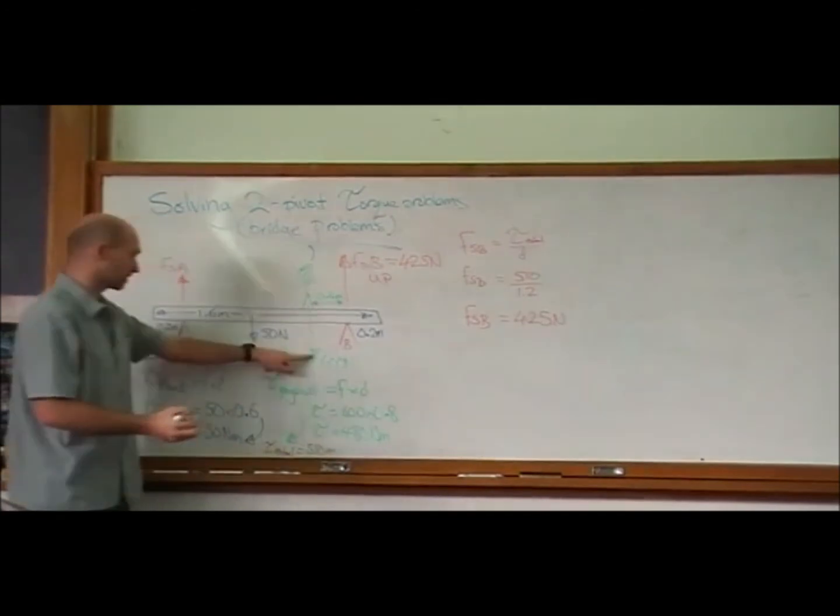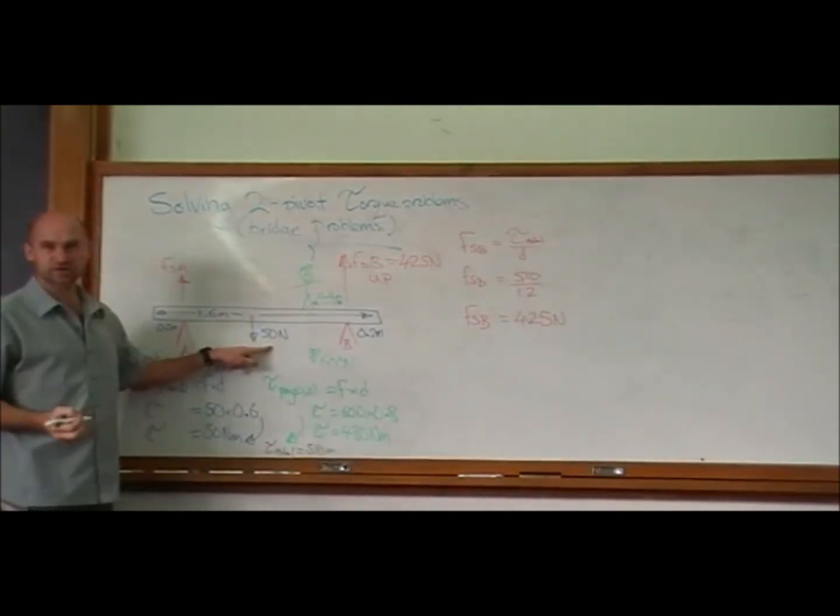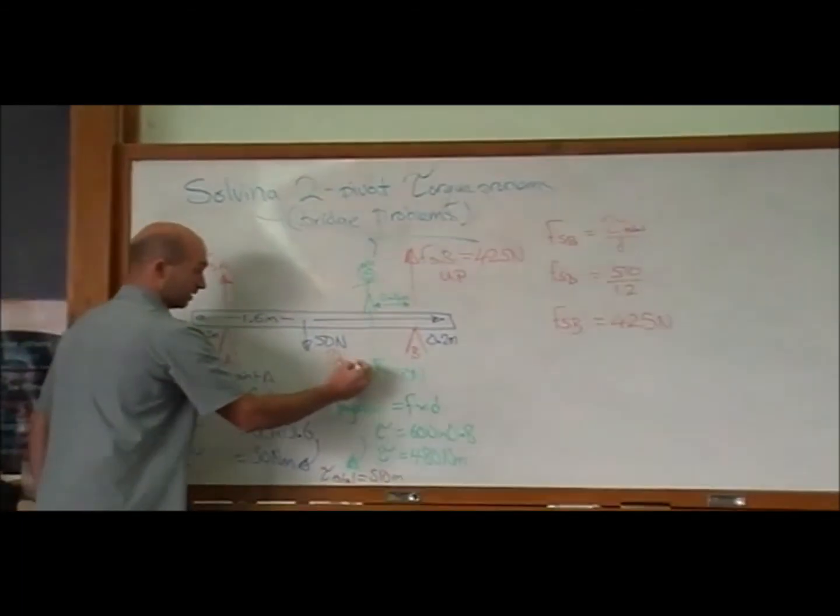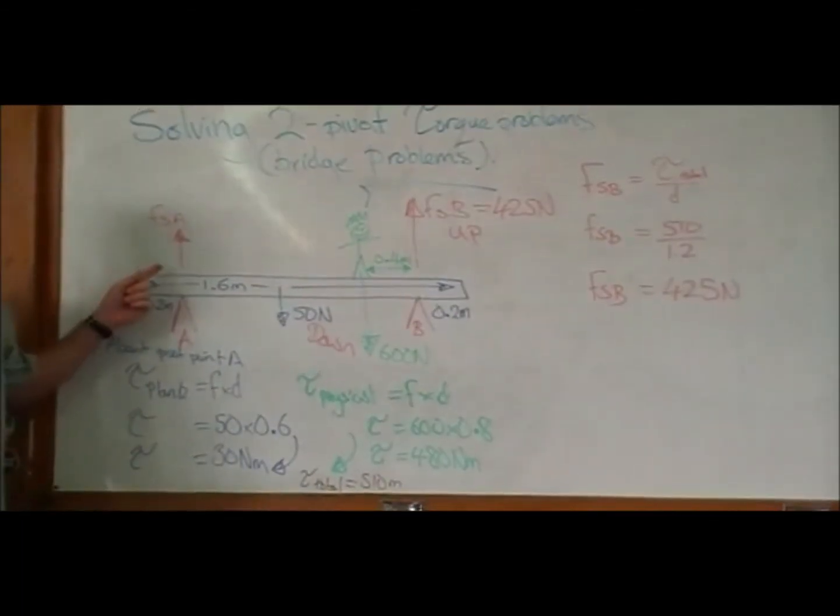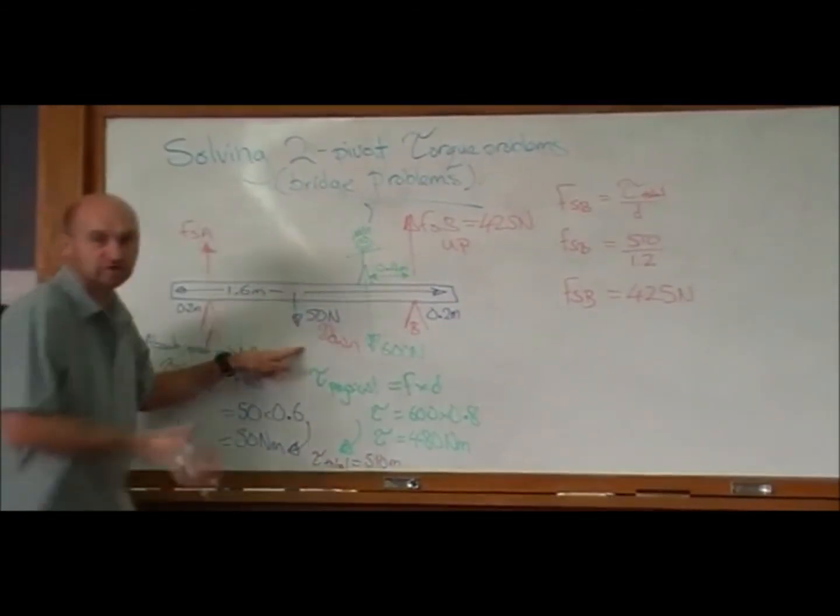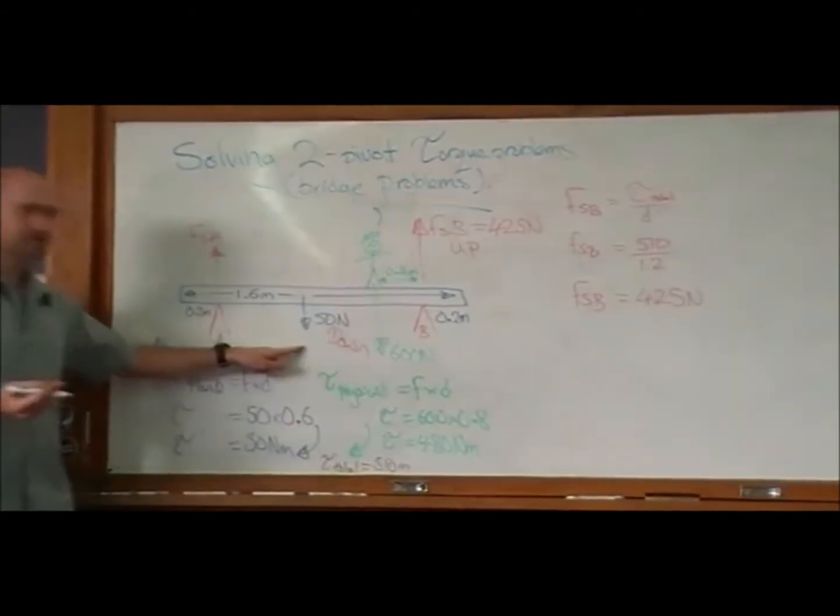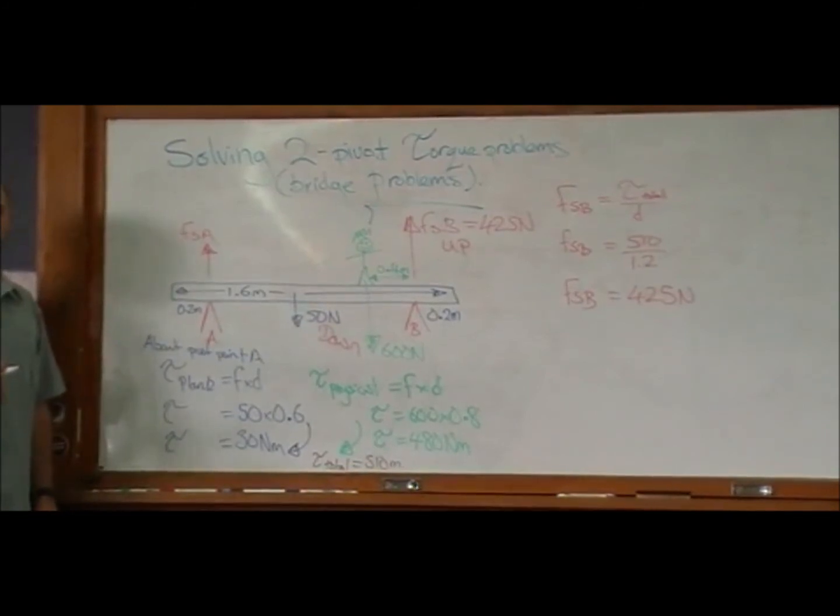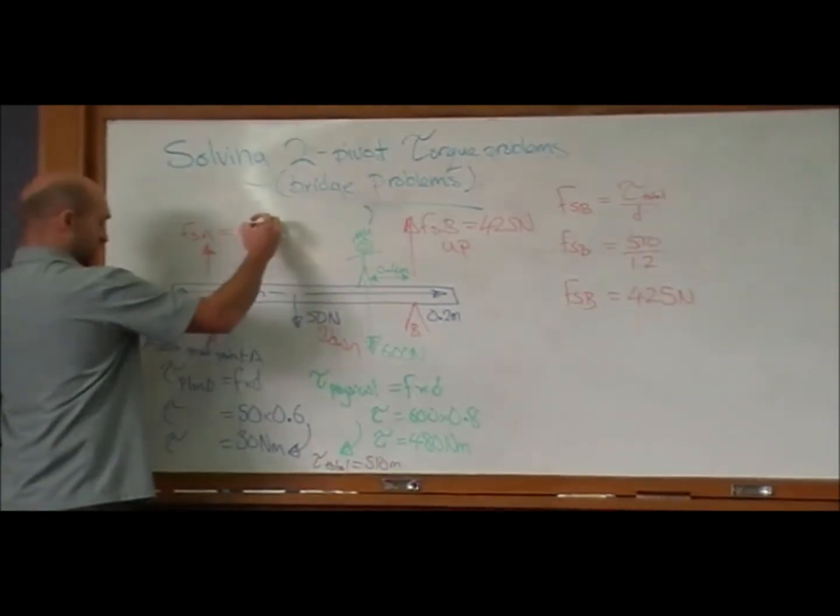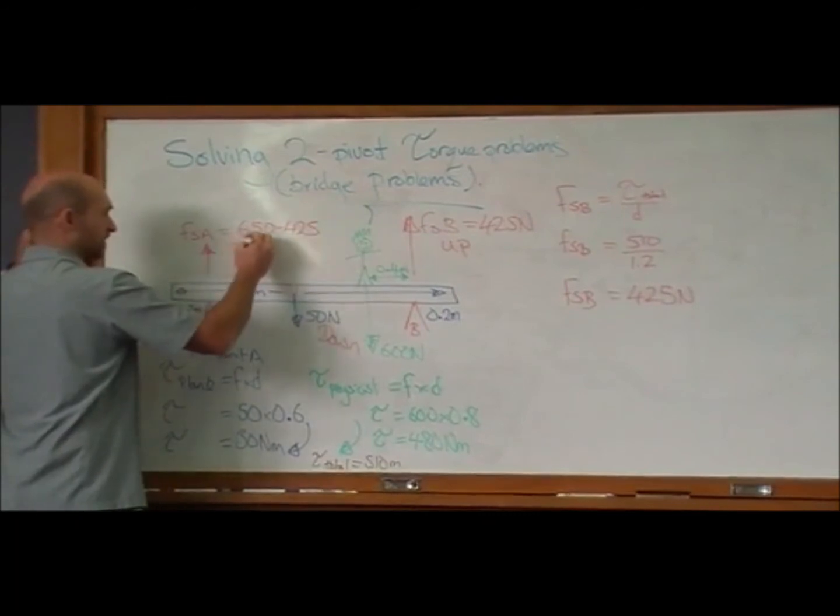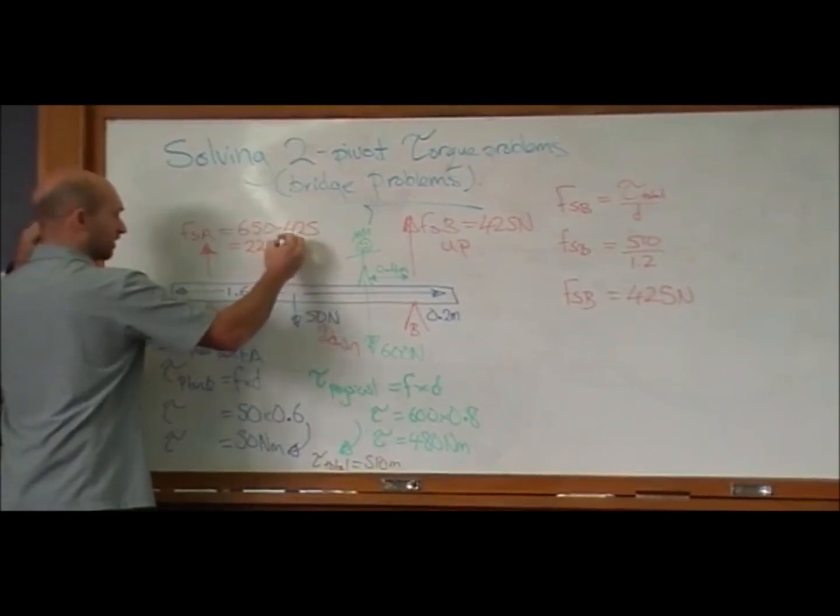And that's up, right? We've got some down forces here, we've got 650. What's our total force down? How much must the other force be? We've got 650 down, but this thing's not falling and it's not flying. We've got 425 up, 650 down. What must the other force be? 225. Because 650 minus 425 must be 225 newtons.